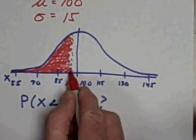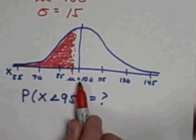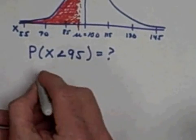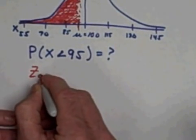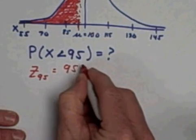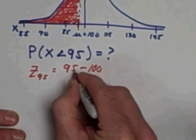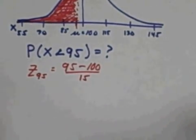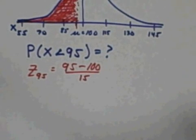The first thing we have to do is to convert this x-value to a z-score. So the z-score for 95 can be found by taking 95, subtracting the mean, and dividing it by the standard deviation. Let's go ahead and do that.